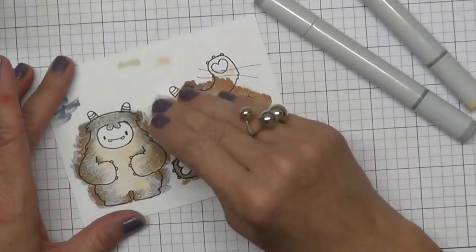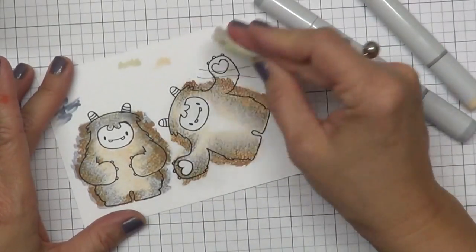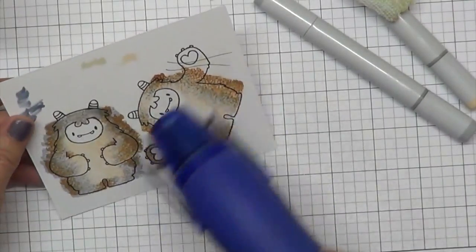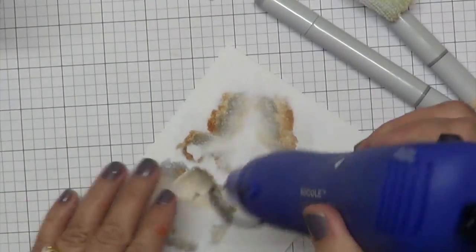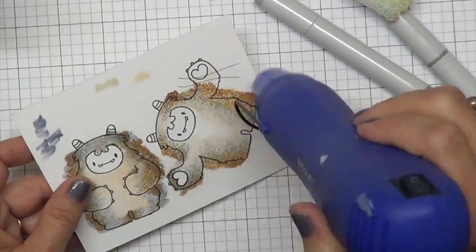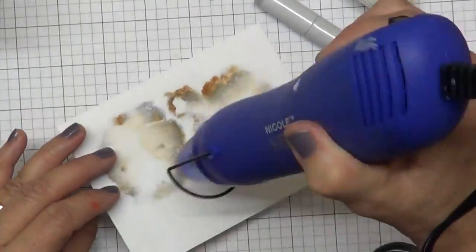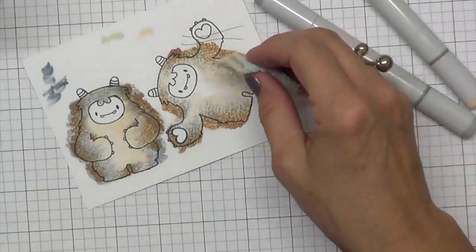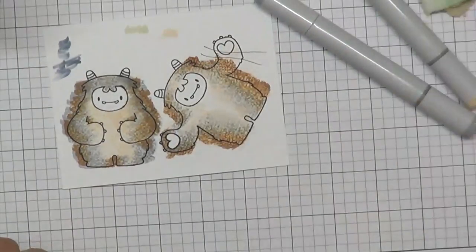I dampened my rag and now I'm going around the Yeti again, just like I did the first time. Heat setting that again and I like to turn it over. I don't want to burn my paper, even though he could look cute, a little bit toasty. And then I'm going to do it a little bit more. So you can play around with this.